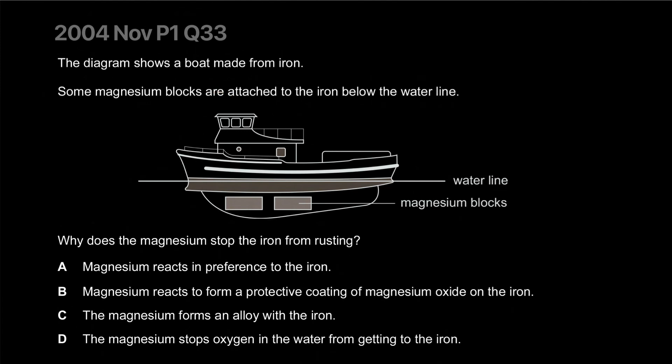The diagram shows a boat made from iron. Some magnesium blocks are attached to the iron below the water line. Why does the magnesium stop the iron from rusting? Magnesium reacts in preference to the iron. Instead of iron, magnesium reacts first and prevents the iron from rusting and you just replace the blocks once it's completely gone. So it's just A.